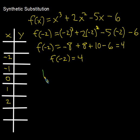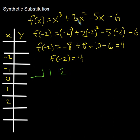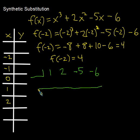We're going to use something called synthetic substitution, which is a lot like synthetic division. We'll take the coefficients from our polynomial: 1 for x cubed, 2 for x squared, negative 5 for the x term, and negative 6 for the constant. Then we'll do the same kind of process as synthetic division.